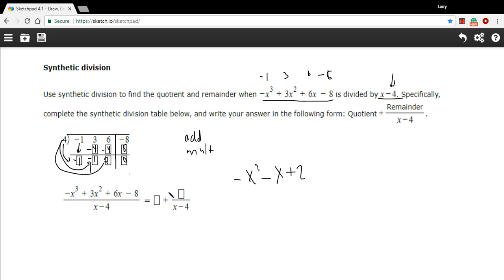Our remainder is 0. So really, I could just write the answer like this. But if somebody asked for the remainder, you could say the remainder is 0. Or you could put it in that form where you add it to the end with the divisor underneath. So this would be 0 over x minus 4. So that would be our answer.